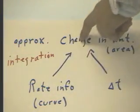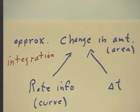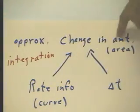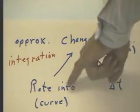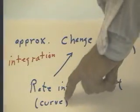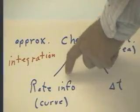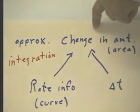This process is integration. It's the reverse of the differentiation process because remember, if we have the amount information we take the derivative to get our rate function. So if we have an amount function we take a derivative; if we have a rate function we integrate to get an amount function.